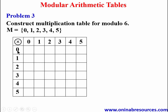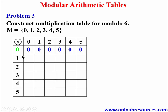Starting from the first row, the row of 0: 0 times 0 gives 0, 0 times 1 gives 0, 0 times 2 gives 0, 0 times 3 gives 0, 0 times 4 gives 0, 0 times 5 gives 0. We are done with the row of 0.